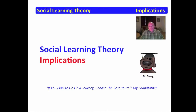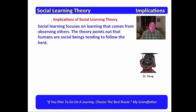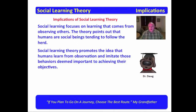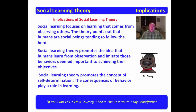Social learning theory doesn't explain all things. It doesn't fit every situation, but it is indeed useful in many routes and may be the tool of interest to you as you try to accomplish specific learning. Social learning focuses on learning that comes from observing others. The theory points out that humans are social beings and that we tend to follow the herd. We learn from observation, imitate behaviors deemed important to achieving our objectives, and it promotes the concept of self-determination. The consequences of behavior play a role in learning. We are social creatures — we like belonging to the herd, and we tend to imitate those behaviors that help us fit in.